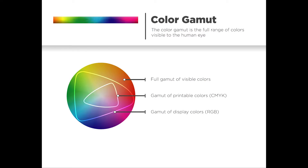The color gamut is the full range of color that your eye can see. The circle you're looking at represents the color range, or color gamut — that is the visible range of colors. We also have other ranges of colors we can reproduce in light — television, video, your cell phone, or a tablet — as well as colors that can be printed using cyan, magenta, yellow, and black inks. The full spectrum of color is what we call the full gamut, and then we have limited gamuts for both print and display.